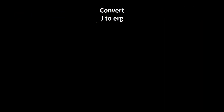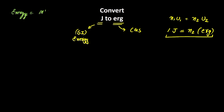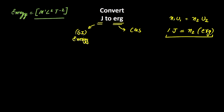Let's do another example where we convert Joule to Erg. Joule is the SI unit of energy and Erg is the CGS unit of energy. We'll use the same concept: N1 U1 = N2 U2. Here N1 = 1 Joule, so N1 = 1, U1 = Joule, equals N2 × Erg. The dimensional formula for energy is M¹ L² T⁻². You can relate it to work done = force × displacement. Force was M¹ L¹ T⁻², multiplied by L gives M¹ L² T⁻².